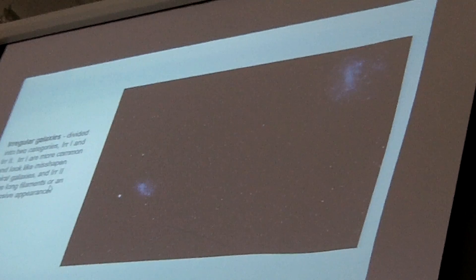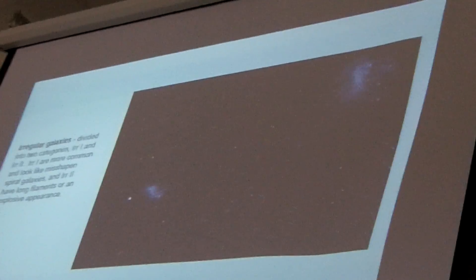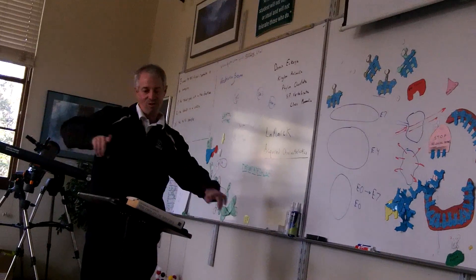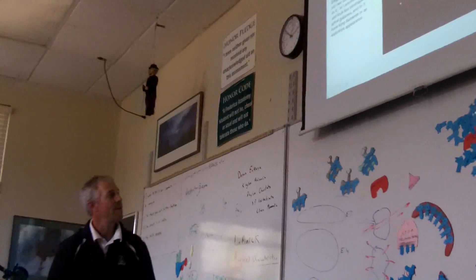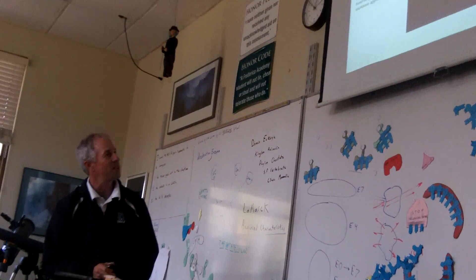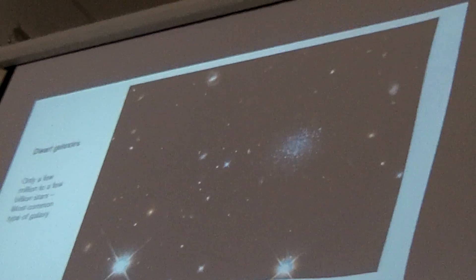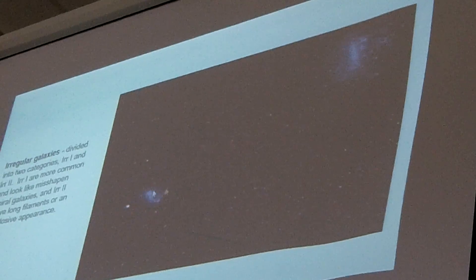And Hubble made two classifications, irregular one and irregular two. He thought irregular ones looked a little like spiral galaxies that had been misshapen and he thought irregular two looked like they were exploding that looked like maybe an explosion went off and fired stuff out in all directions. I think that these Magellanic clouds are supposed to be irregular twos I'm not sure. They're irregular but I don't know if they're irregular one or two.